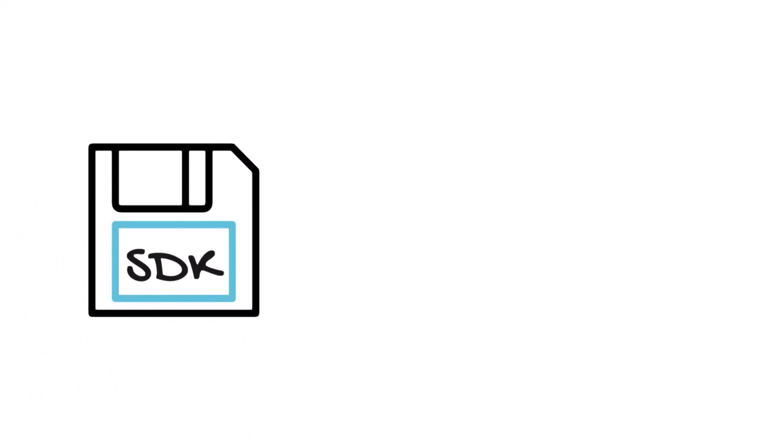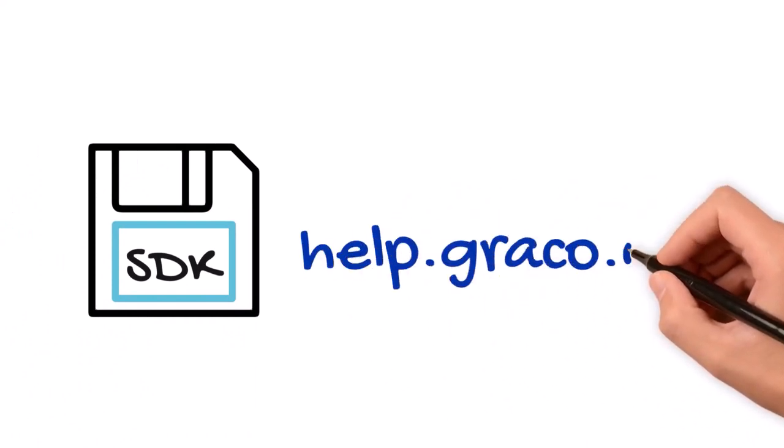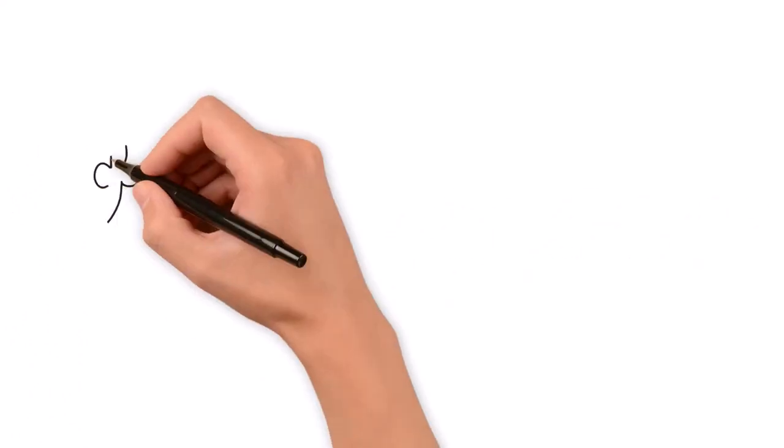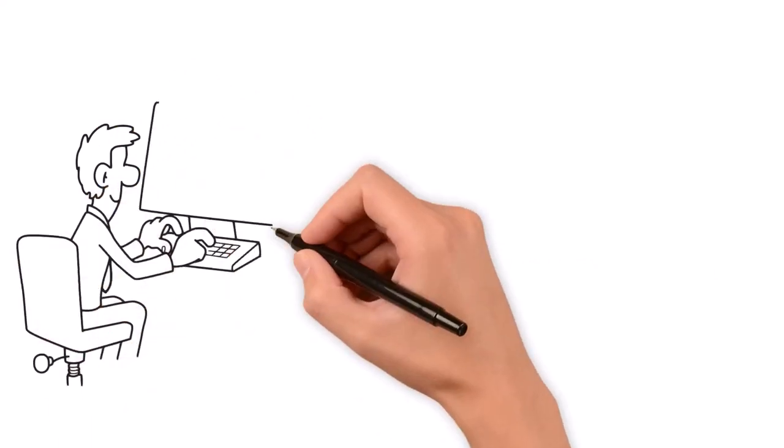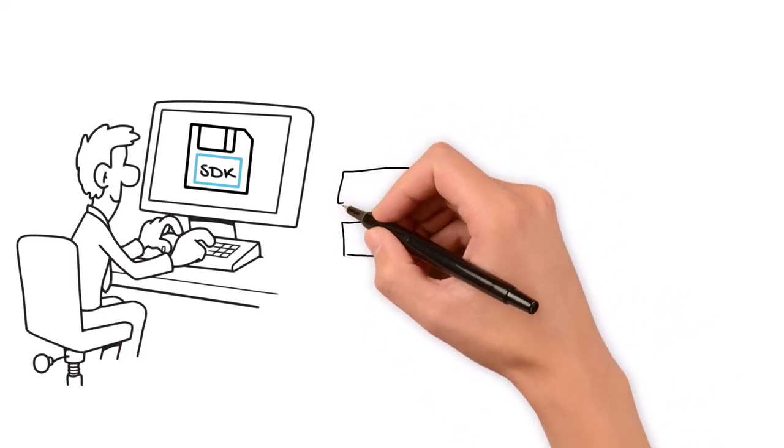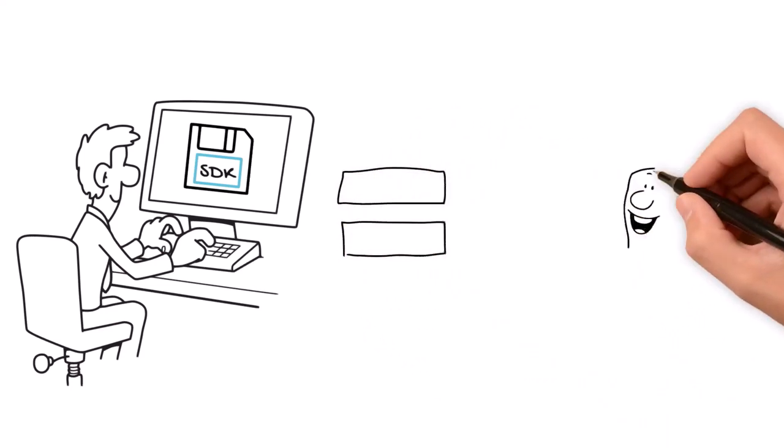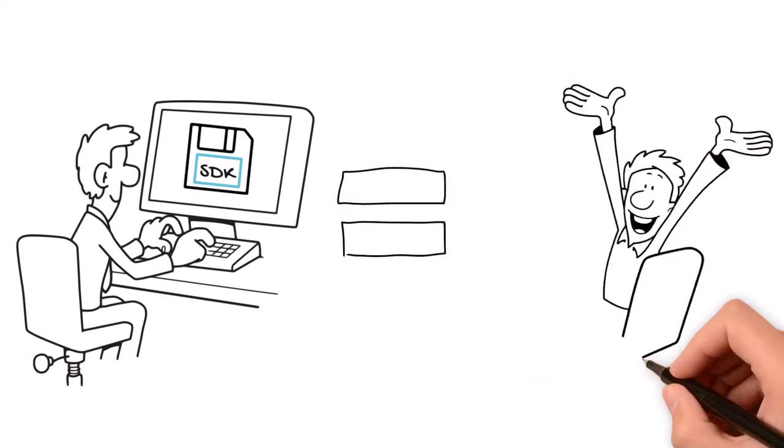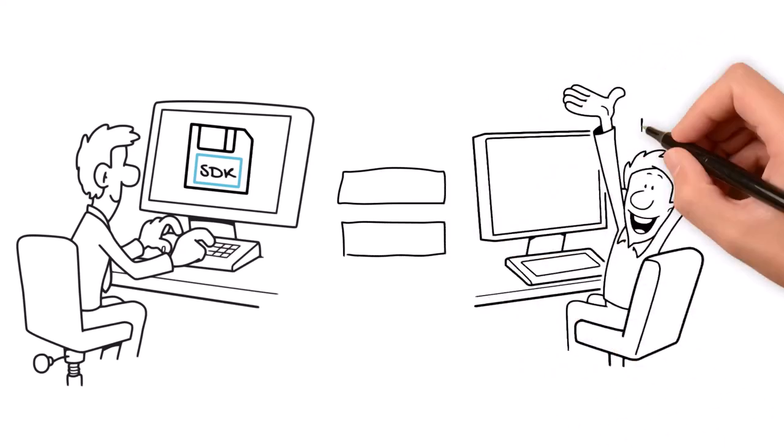SDK files are available on help.graco.com as downloadable zip files. After a PLC programmer downloads and unzips their specific SDK file, they simply import the files into their software environment and make adjustments to the code as needed for their specific application. Easy peasy.